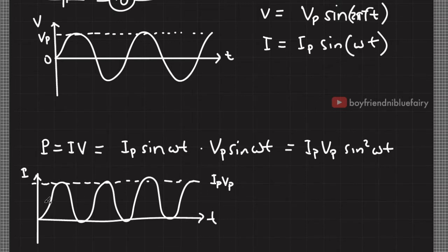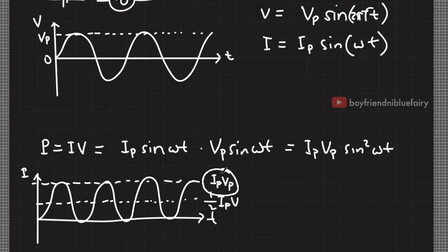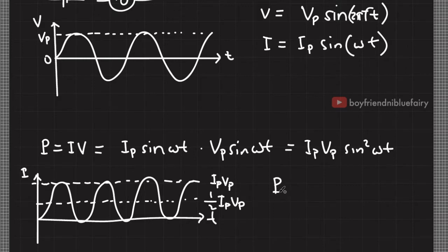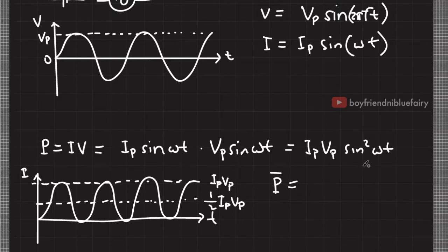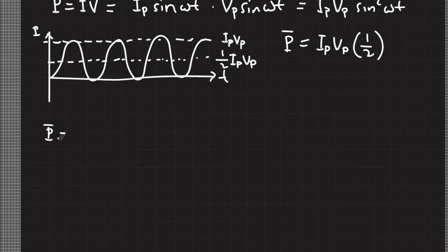Going back to this expression, the factors I sub P and V sub P are constant, and the sine squared introduces fluctuations. Using integral calculus, the average of a sine squared function along one cycle — assuming one cycle is 2π — is equal to 1 half. Let's represent average power in one cycle as P bar. Since the average of the sine squared function over one cycle is 1 half, I'll end up with I sub P times V sub P times 1 half.